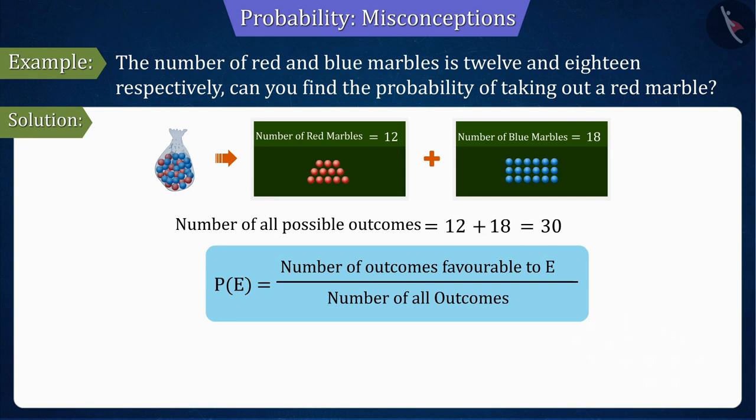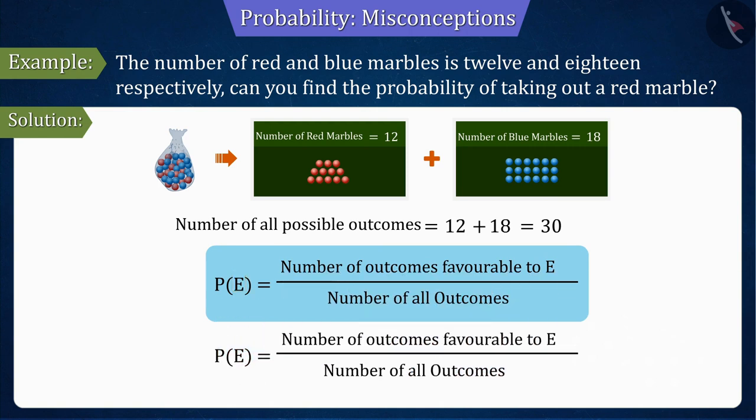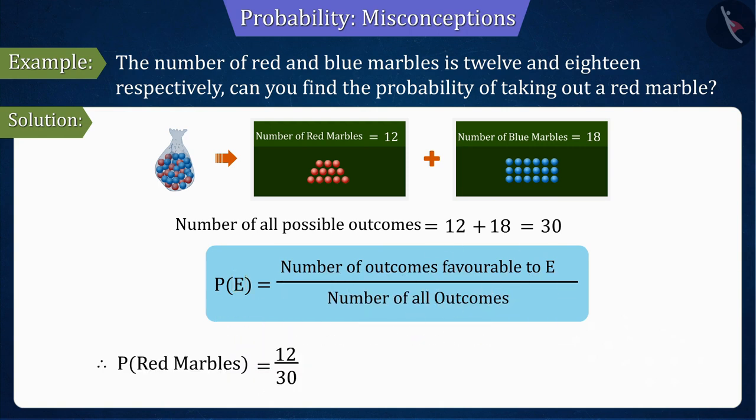As we have studied the formula for finding the probability, where the number of favourable outcomes of the event E, that is red marbles, is 12. From the formula, the number of favourable outcomes is equal to 12 and the number of all possible outcomes of the experiment is 30.